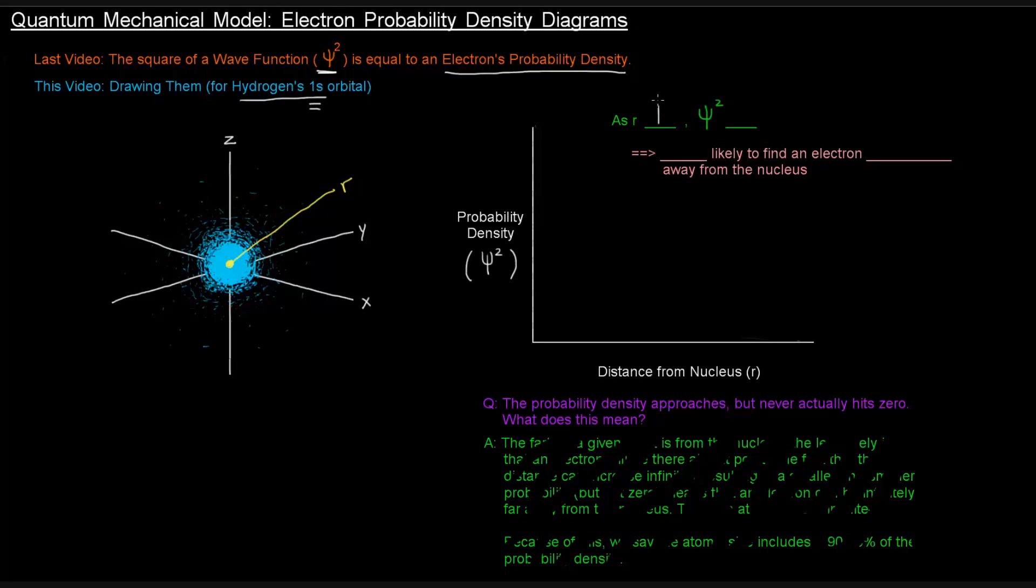So as you increase in distance away, some distance we call r, as you move further and further away, the likelihood that you would find an electron at that point becomes lower. So as r increases, the probability density decreases, which means that you're less likely to find an electron further away from the nucleus. And that makes sense. If we're thinking about hydrogen, it's got one proton and one electron. So the electron is attracted to the proton at the nucleus. The proton's in the nucleus, it's positively charged, the electron's floating somewhere around it. It makes sense that it would most likely be as close as it can be to that nucleus because they're attracted, the opposite charges attract.